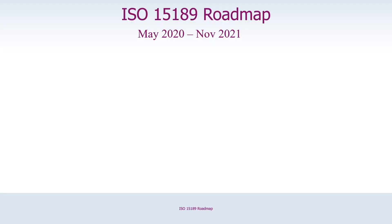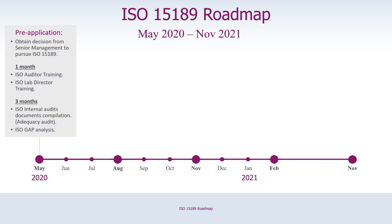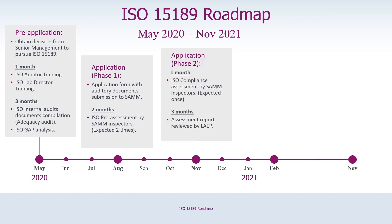Our ISO 15189 roadmap shows how much time is needed to achieve accreditation, from the preparation stage through to receiving it. Starting in May 2020, we'll spend one month on training and three months on internal audits and gap analysis. In August, we'll send our application form with auditor documents to SAMM and perform pre-assessment. In November, the ISO compliance assessment will be done by SAMM inspectors and the assessment report reviewed by the LAEP. In February 2021, we'll finally have our accreditation approved.